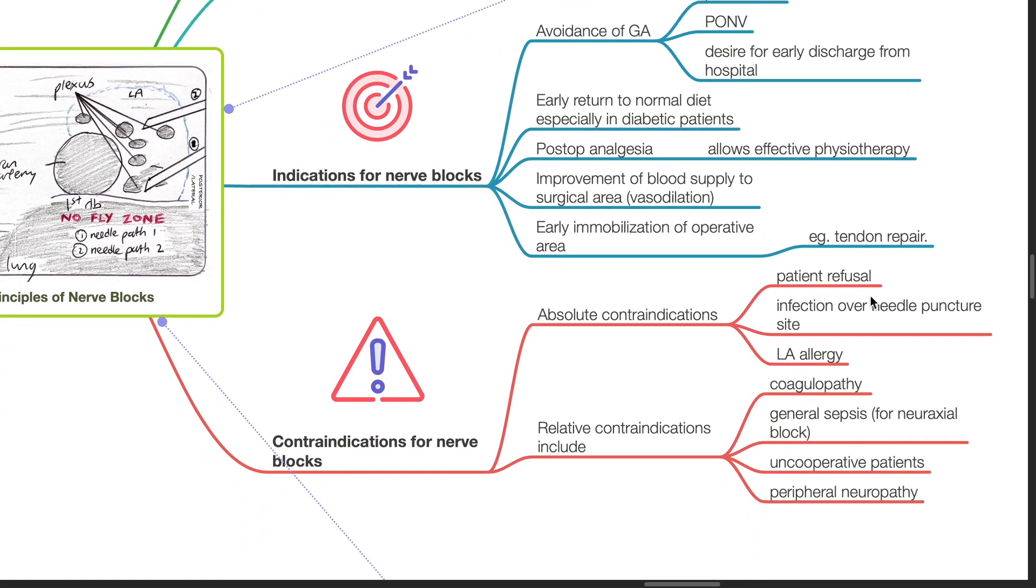Contraindications for nerve blocks include absolute and relative contraindications. Absolute contraindications are patient refusal, infection over needle puncture site, and local anesthetic allergy. Relative contraindications include coagulopathy, general sepsis for neuraxial block, uncooperative patients, and peripheral neuropathy.